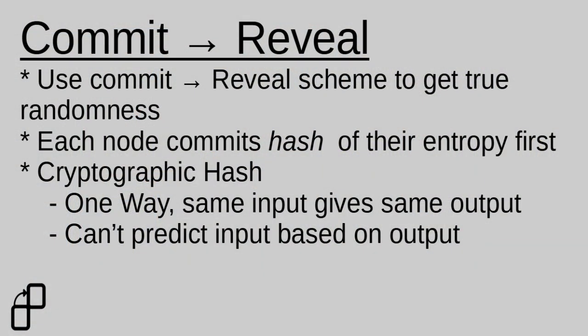So what we do instead is each node generates their own random number and hides it using a cryptographic hash. A cryptographic hash is a one-way function that takes some input and always gives the same output for that input. A key property of these is you can't tell what the input was based on the output of the hash function. This is something called pre-image resistance.